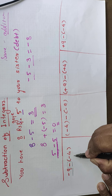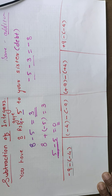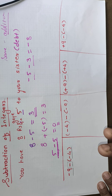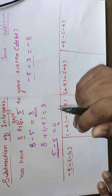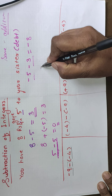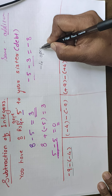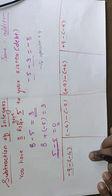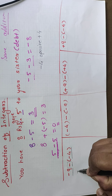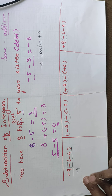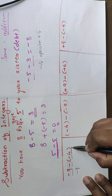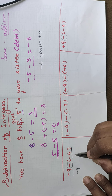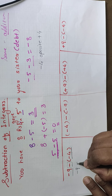From minus 9 we have to subtract minus 4. How to solve this? We learned the opposite numbers — the opposite number of minus 4 is plus 4. Whenever we are doing the subtraction: the first number we write as it is, and for the second number, we add its opposite number. So minus 4's opposite number is plus 4.